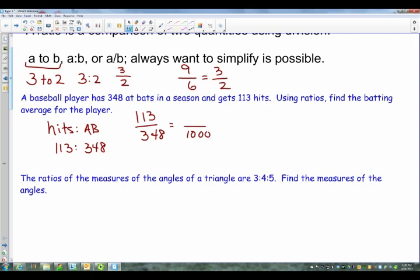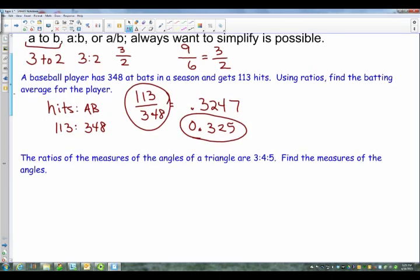Now what that ends up doing is creating a decimal. So you're going to take this, 113 divided by 348, and you get 0.3247, and so on. And we're going to round to 0.325. And so you say that the baseball player has a 325 batting average. Okay, now if you think of that in terms of a ratio, it would be 0.325 to 1. And that's the way that that's reduced. But this fraction here is the ratio that they were looking for. Okay, so the decimal is just a little bit of an extension.